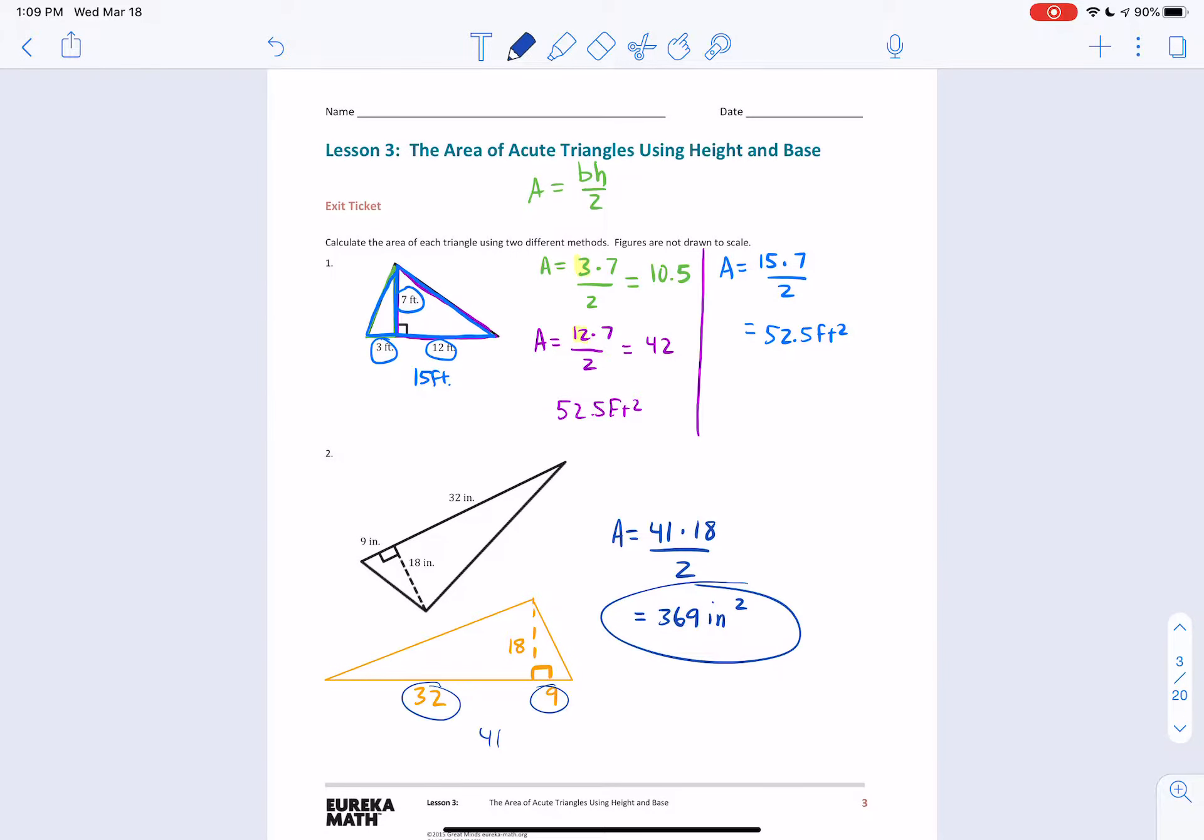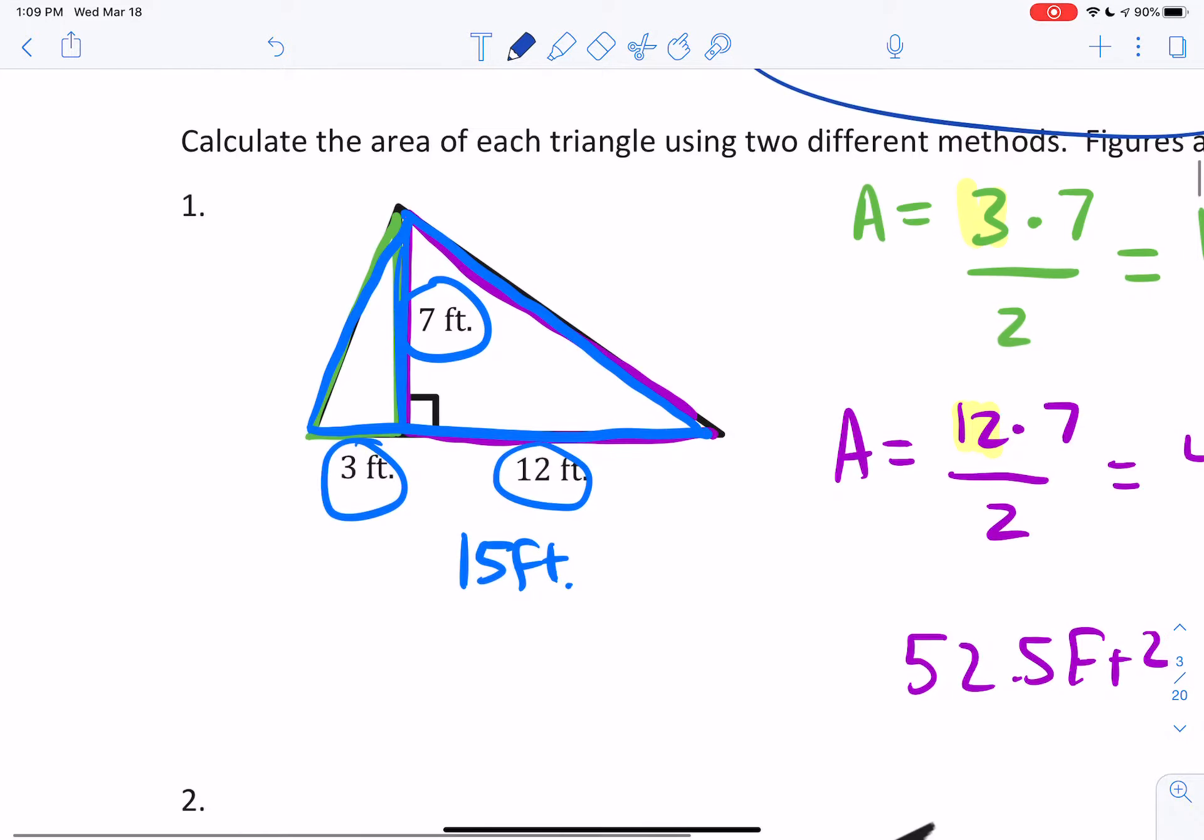So area of a triangle. You just got to remember that main formula is base times height and then cut it in half. Base times height divided by 2. If you get a triangle that looks like one of these, hey, why don't you just add these two numbers?